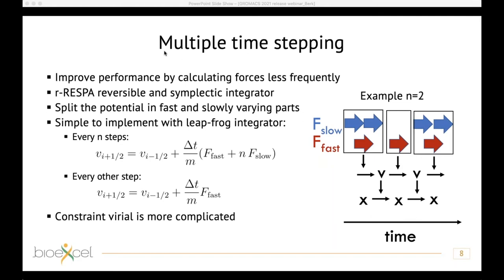The main goal is to improve performance by calculating some parts of the forces less frequently. The scheme we use is the standard RESPA — reversible and symplectic integrator. The idea is that you split the potential into fast and slow varying parts, which can be because some atoms move faster or slower, or because the forces themselves vary less with atomic motions because the potential is quite smooth. This is currently implemented only for the leapfrog integrator in GROMACS.